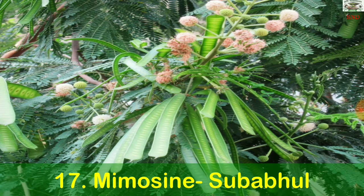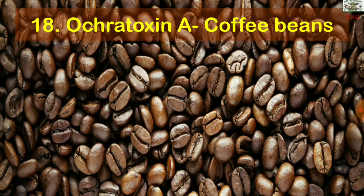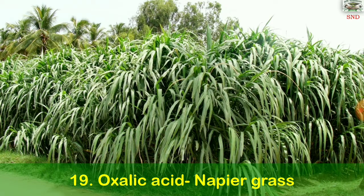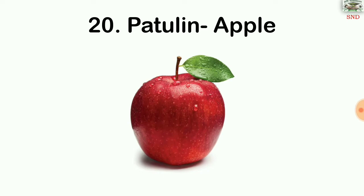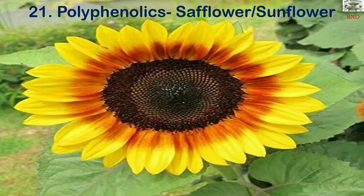Mimosine is found in subabul. Ochratoxin A is in coffee beans. Oxalic acid is in napier grass, and patulin is in apple. Polyphenolics are in safflower and sunflower.